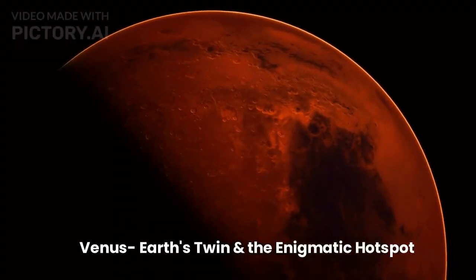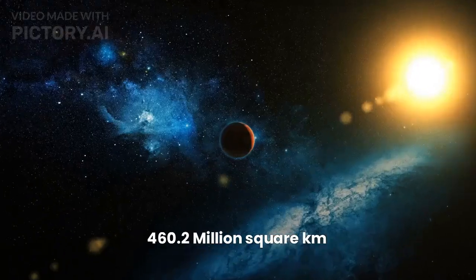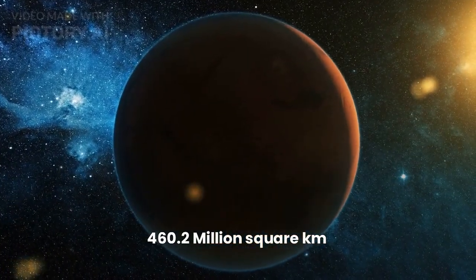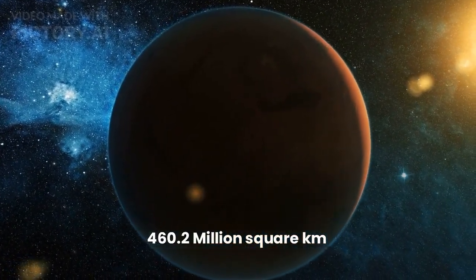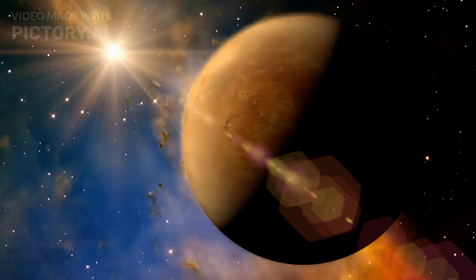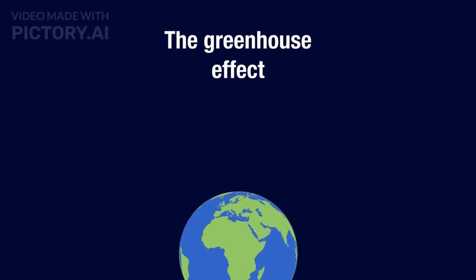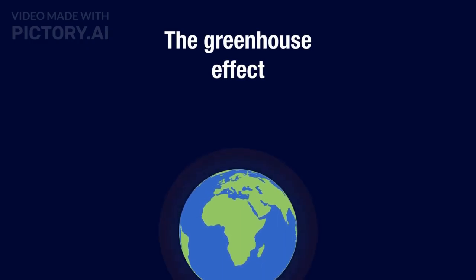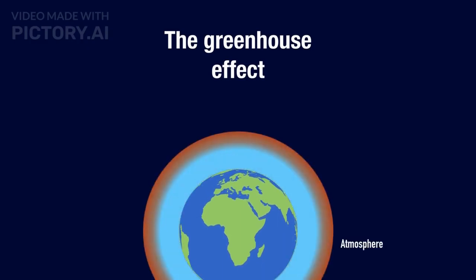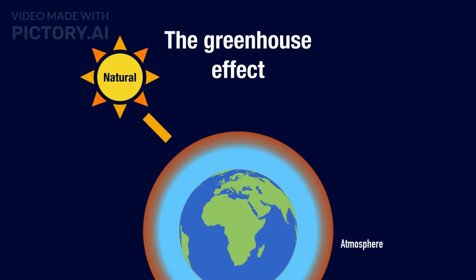Second, Venus Earth's twin and the enigmatic hotspot. The surface area of Venus is 460.2 million square kilometers. Venus, often referred to as Earth's sister planet, has a thick, toxic atmosphere primarily composed of carbon dioxide. Its runaway greenhouse effect results in surface temperatures hot enough to melt lead. Despite these inhospitable conditions, Venus showcases a brilliant appearance as the morning or evening star due to its reflective clouds.